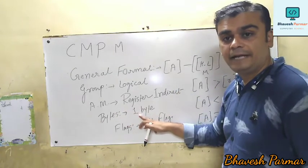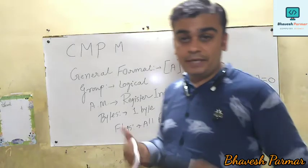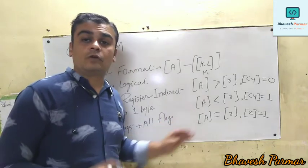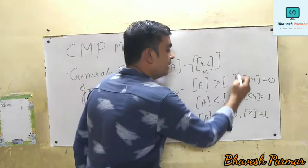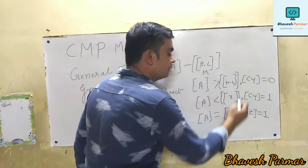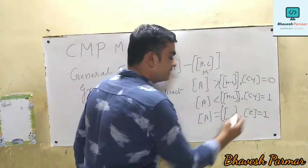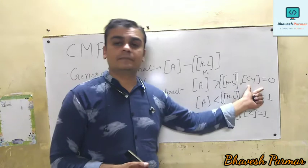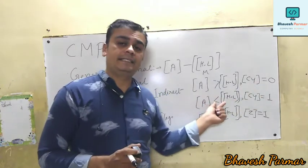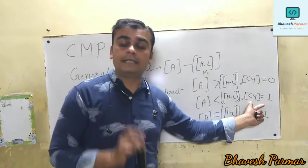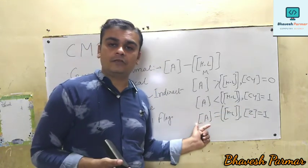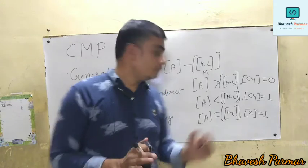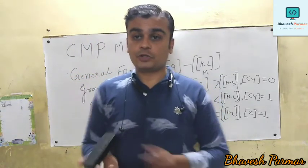For compare with memory: bytes is one-byte instruction, and all flags may be affected. The three scenarios are: content of A greater than content of (HL) — CY flag is 0; content of A less than content of (HL) — CY flag is 1; and if both accumulator and memory contents are same — Z flag is 1.